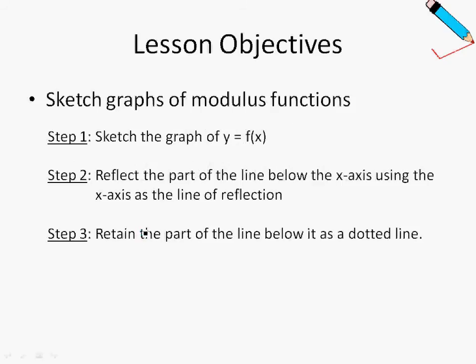Let's first look at our learning objectives and think about the step-by-step process of sketching these graphs. Given any modulus function graph, we will always sketch the original graph or the function y equals f(x), then reflect the part of the line that is below the x-axis, or rather use the x-axis as a line of reflection, and finally, retain the part of the line below what we have just sketched as a dotted line. If you're feeling confused at this moment, don't worry because we'll look at some tangible examples.